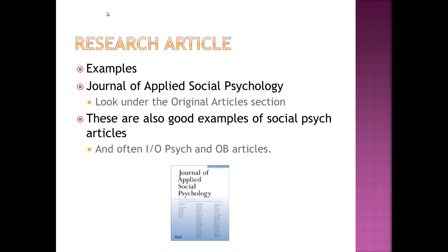A couple of examples: you can look at the Journal of Applied Social Psychology. They have two or three different types of articles in this journal. You want to look at the original articles, though the other types of articles — I think the short papers or something like that — would also be good examples of research articles. These are also good examples of social psych articles, and you often get some good IO or especially organizational behavior articles in that journal.